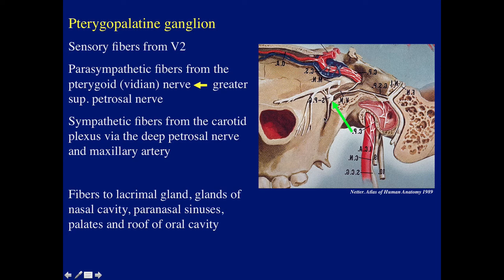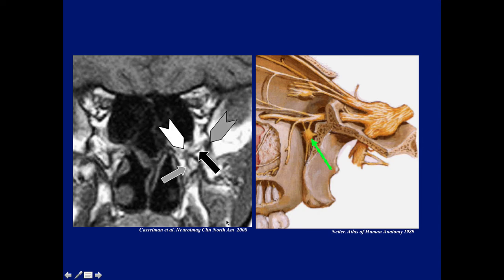Why is the pterygopalatine ganglion so important? It gets sensory fibers from the maxillary nerve; it gets parasympathetic fibers from the vidian nerve, which is really a continuation of the greater superficial petrosal nerve — I'll discuss that when I talk about the facial nerve. Then it gets sympathetic fibers from the carotid artery. From the ganglion, fibers go to the lacrimal gland, the glands of the nasal cavity, paranasal sinuses, palate, and the roof of the oral cavity. On the coronal image here's the pterygopalatine fossa — we can see the ganglion and the pterygopalatine branches.